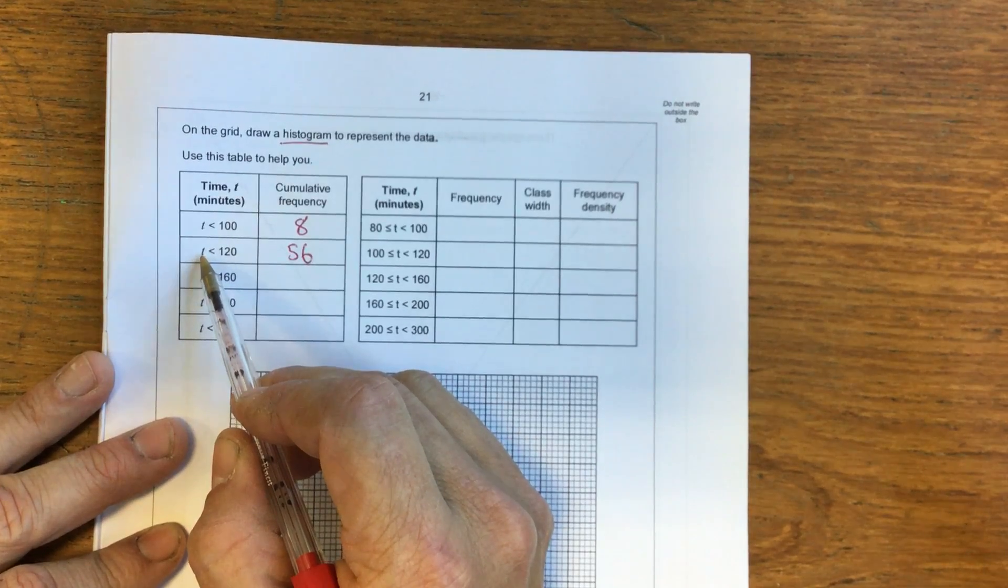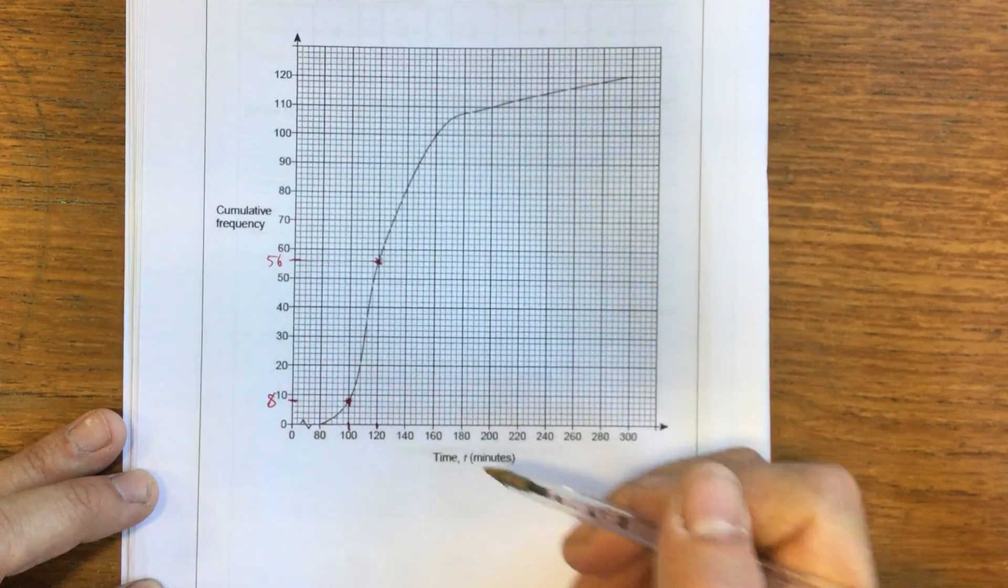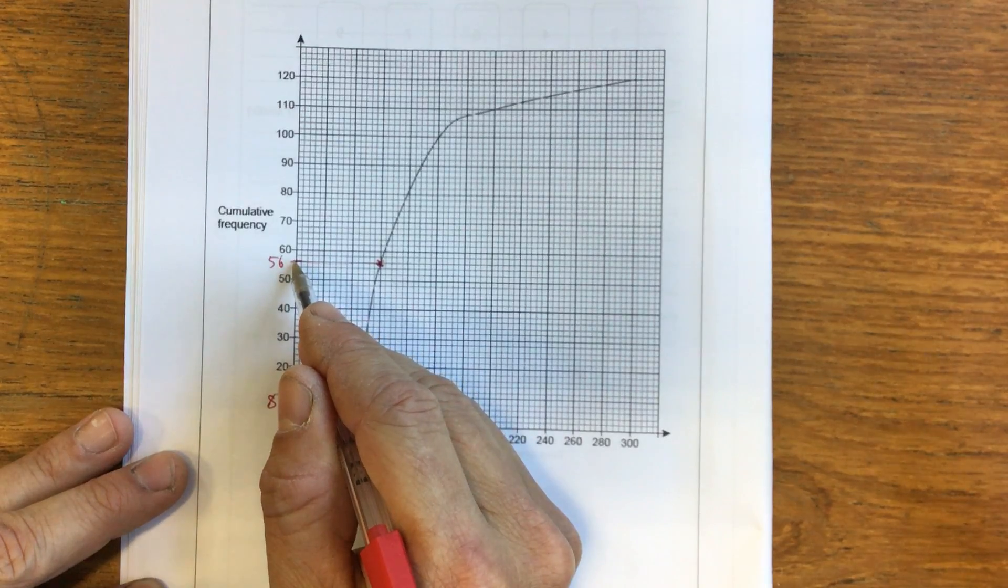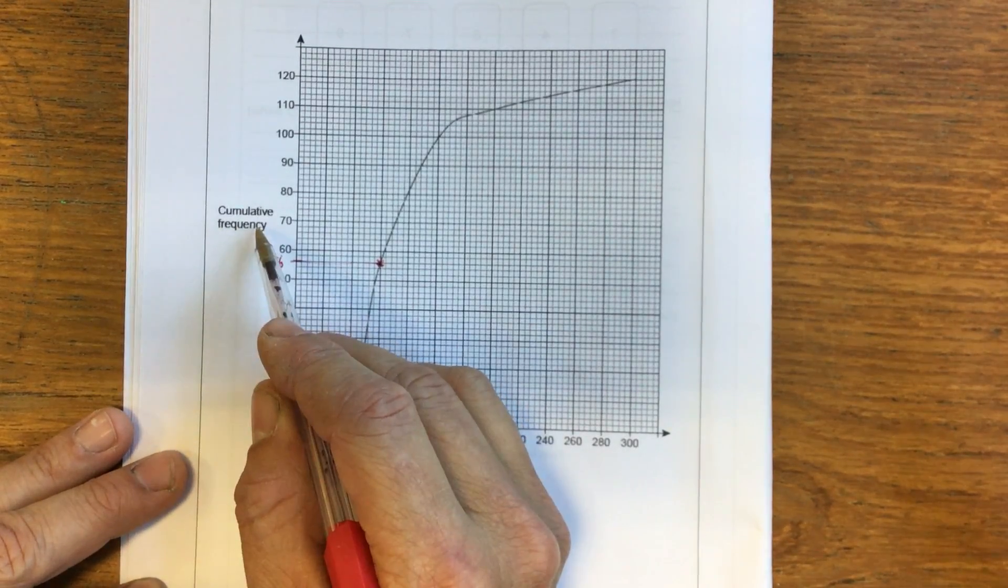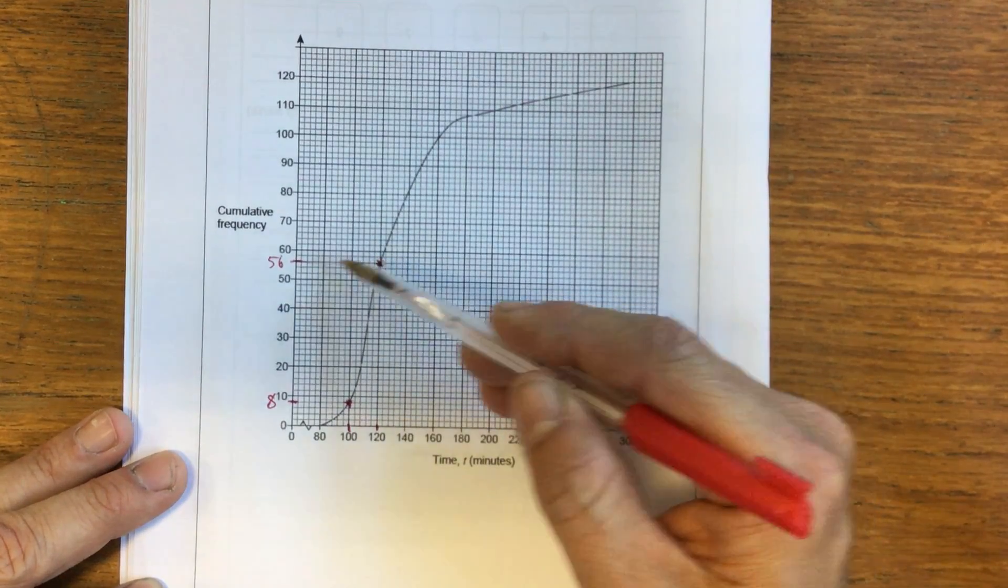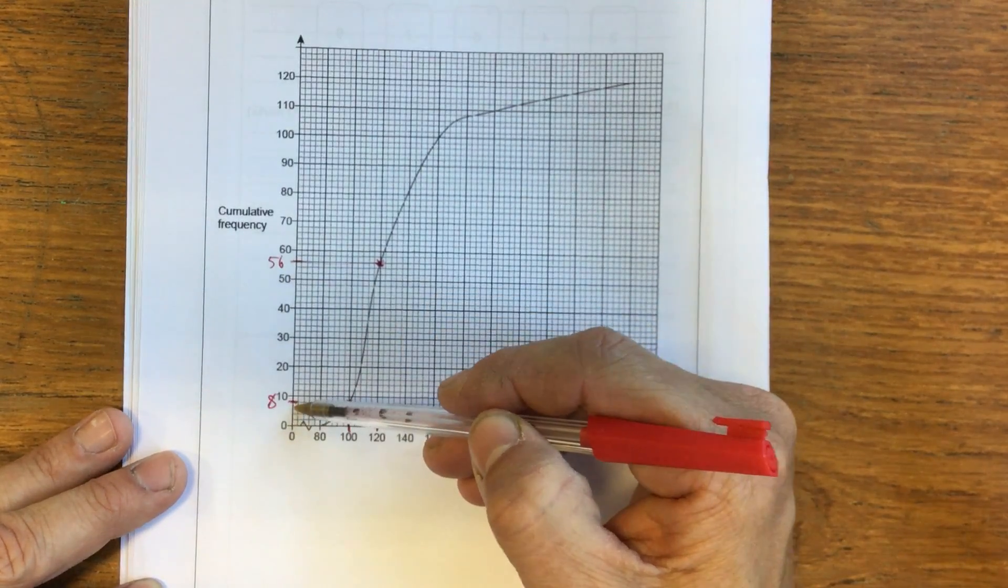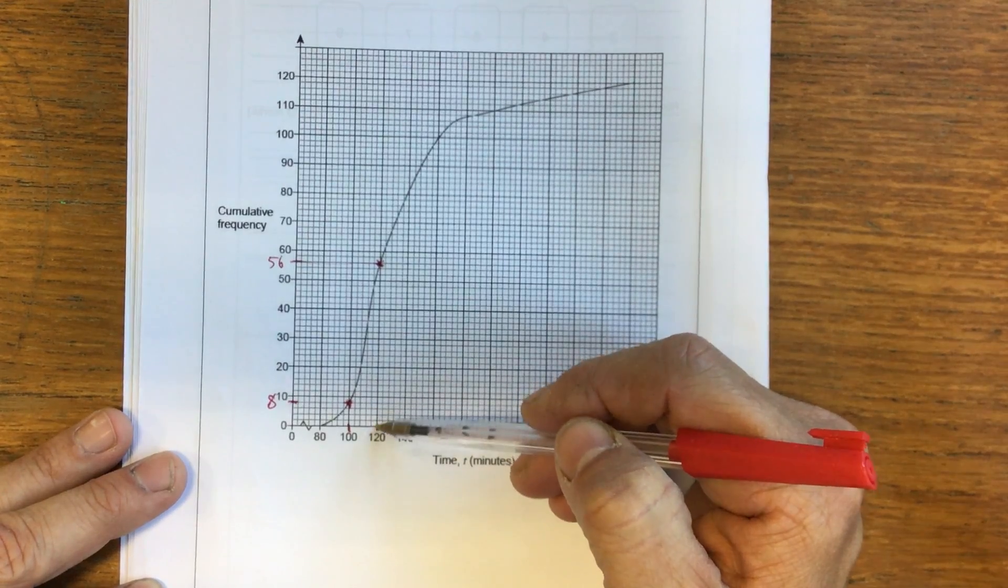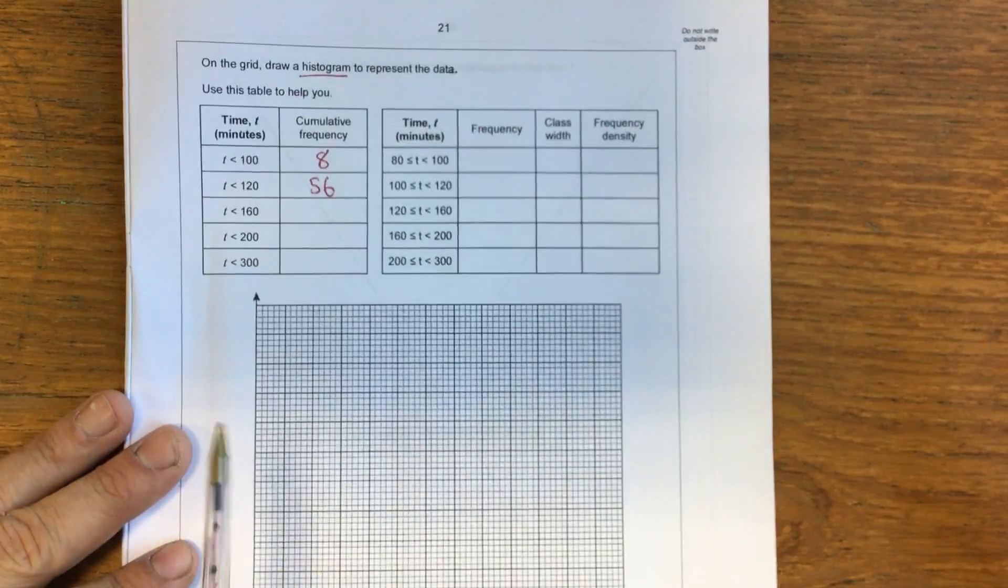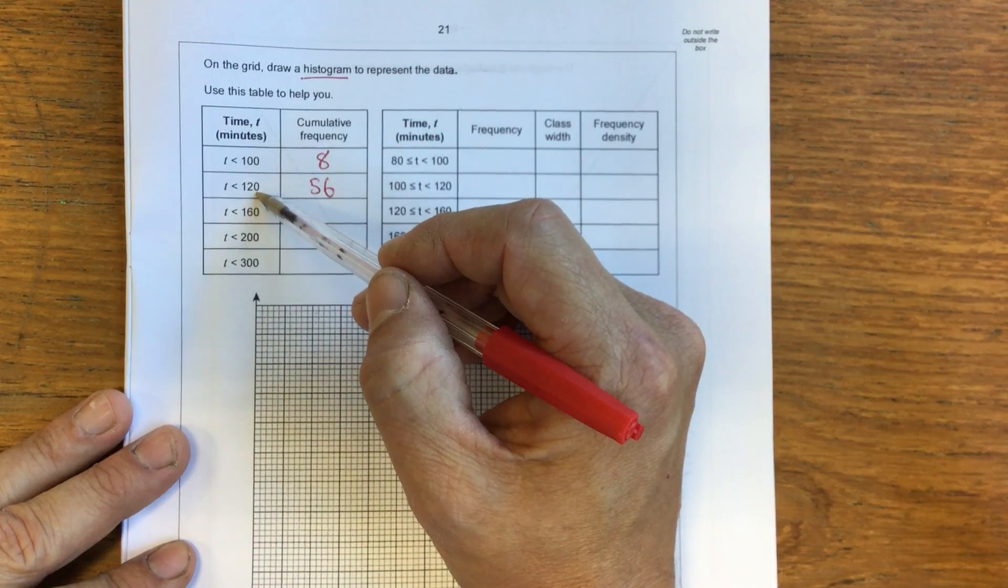The next row says time is less than 120. So coming back to this graph, if I look at 120 minutes on my horizontal axis and project up, I can see that that relates to 56 on the cumulative frequency axis. Now this means that by the time 120 minutes had elapsed, 56 people had completed the marathon. Now that includes these 8 because these 8 people were also less than 120 minutes. So we've got 8 by the first 100 minutes, 56 by 120.